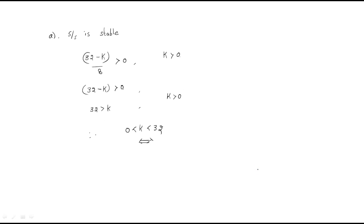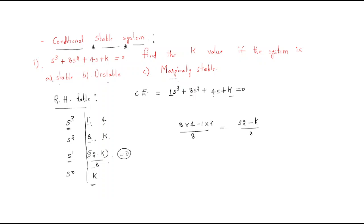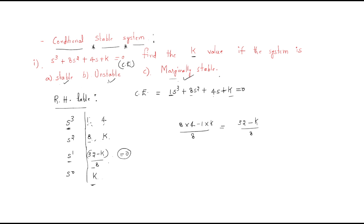In summary, given the characteristic equation with unknown k, we used the Routh-Hurwitz criterion to find: the system is stable for 0 < k < 32, unstable for k < 0 or k > 32, and marginally stable at k = 32 with natural frequency ωn = 2 rad/s. Only the marginally stable system has oscillations and a natural frequency; stable and unstable systems do not. This is a very important concept for understanding system behavior.